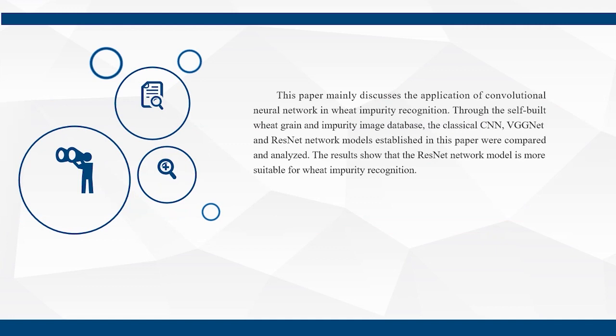The fifth part, conclusion. This paper mainly discusses the application of convolutional neural network in wheat impurity recognition through the self-built wheat impurity image database. The classic CNN, VGGNet and ResNet network models established in this paper were compared and analyzed. The results show that the ResNet network model is more suitable for wheat impurity recognition.